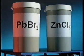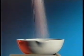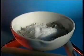Change the compound from lead bromide to zinc chloride and the products of electrolysis will be different. What would you expect to see happening when electricity is passed through molten zinc chloride?